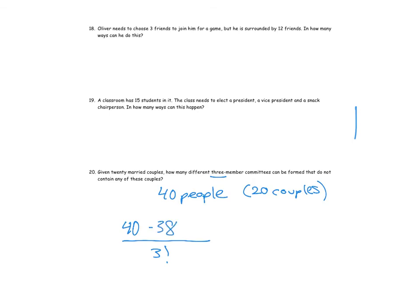And again, once I've chosen that person, their partner cannot be on the committee. So then there's 36 ways to choose the final person and dividing out the number of ways of arranging those three people would be 9,120, if you do it out.